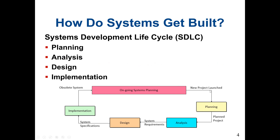When we have a new project, the first phase we go through is planning, and the output of the planning phase will give us the planned project. Then we move on to the analysis phase. In the analysis phase, the system analysts and also the stakeholders of the project come up with the system requirements.